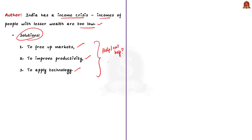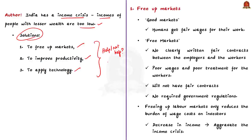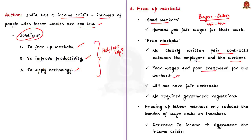The first solution is to free up markets. The author first defines good markets: in good markets, both buyers and sellers have a win-win situation, humans are not treated like commodities, and they get fair wages for their work. In contrast, free markets will not have clearly written fair contracts between employers and workers, and these contracts will not be regulated by the government. A free market means poor wages and poor treatment for workers. Therefore, the author tells that the free market aggravates — that is, it increases — the income crisis.